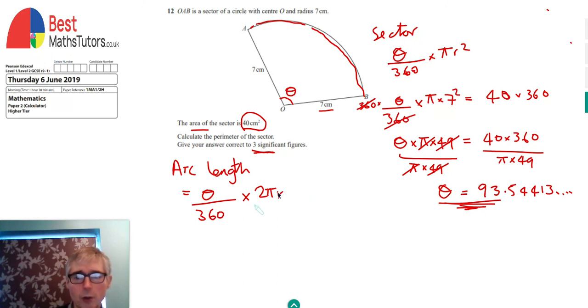We can take the value of the angle that we found before and put that into our equation and it will give us what the arc length is.